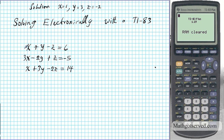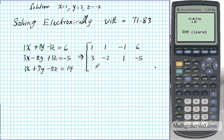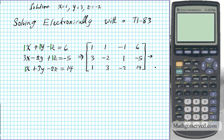All I do is extract coefficients. If there's no number, the default coefficient is 1. So for the first equation: x has coefficient 1, y has coefficient 1, z has coefficient negative 1, and the constant is 6. Transforming the system into an augmented matrix gives: row 1 is [1, 1, -1, 6], row 2 is [3, -2, 1, -5], and row 3 is [1, 3, -2, 14]. I'll call this matrix A and store it there.